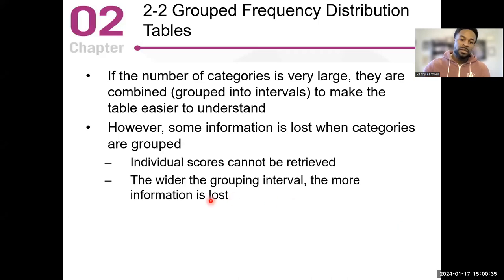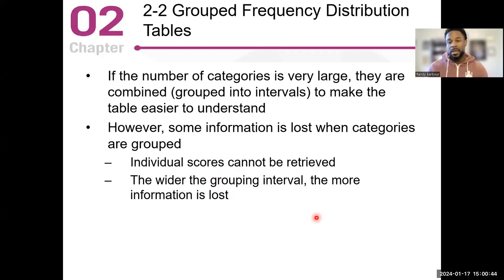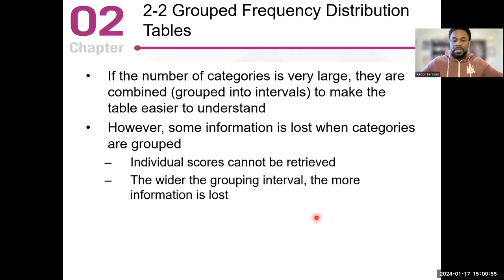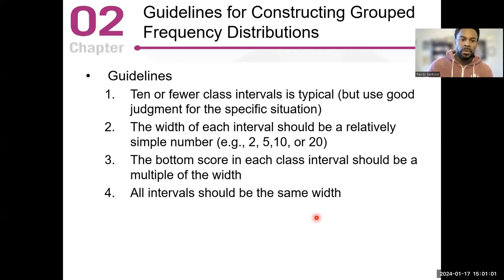Individual scores are retrieved when not grouped, and the wider the grouping number, the more information is lost. If I did one through five with 10 frequency counts, I lose all the information — I don't know who scored a one, two, three, four, or five. I made the interval too wide.